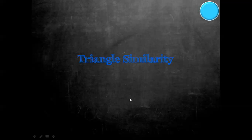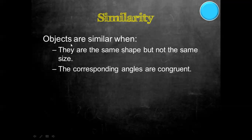In this video, we are going to cover triangle similarity, part one and part two. With similarity, objects are similar when they're the same shape but not the same size. We know that the corresponding angles are congruent, and we also know that the sides are proportional.